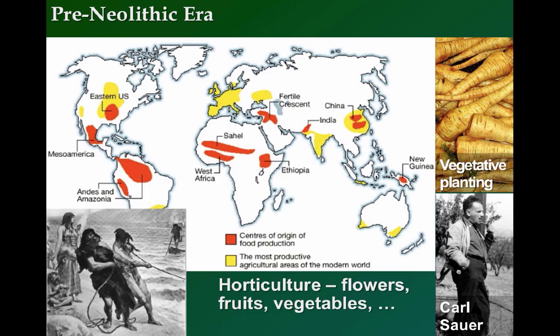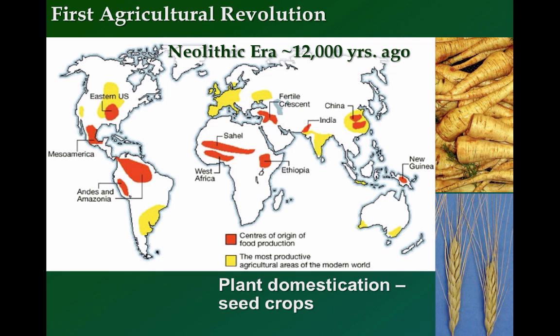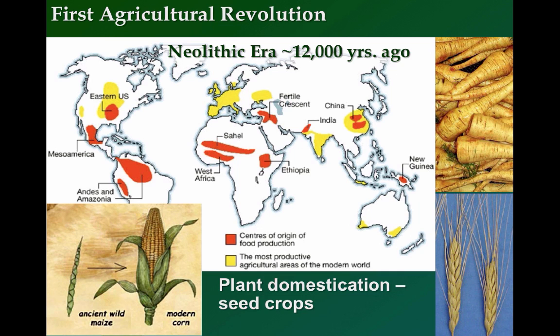The big jump forward occurred with the cultivation of seed crops such as corn, barley, or wheat. These crops are much more difficult to grow efficiently than root crops. The cultivation of seed plants beginning around 12,000 years ago was the true beginning of the first agricultural revolution. It took a great deal of trial and error in selecting the best seeds from existing crops, sowing the land properly, watering the plants, and harvesting the crops at just the right time.